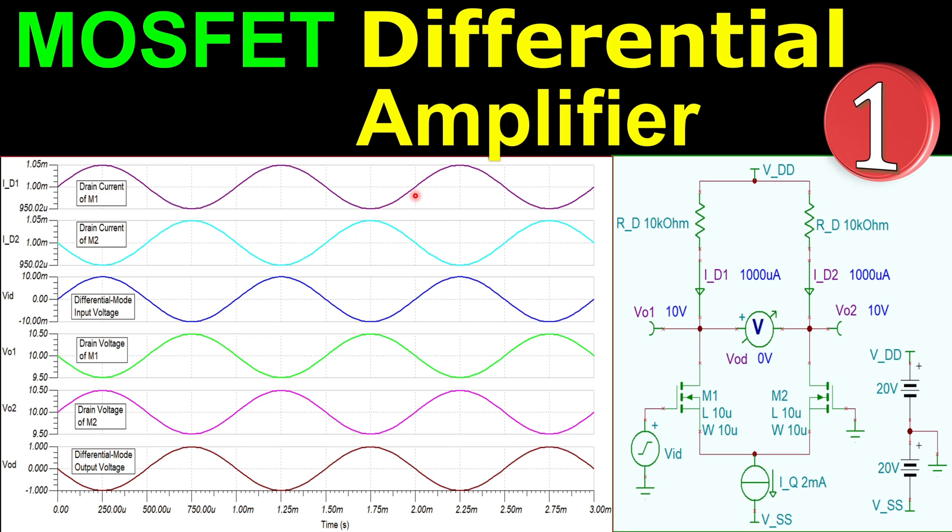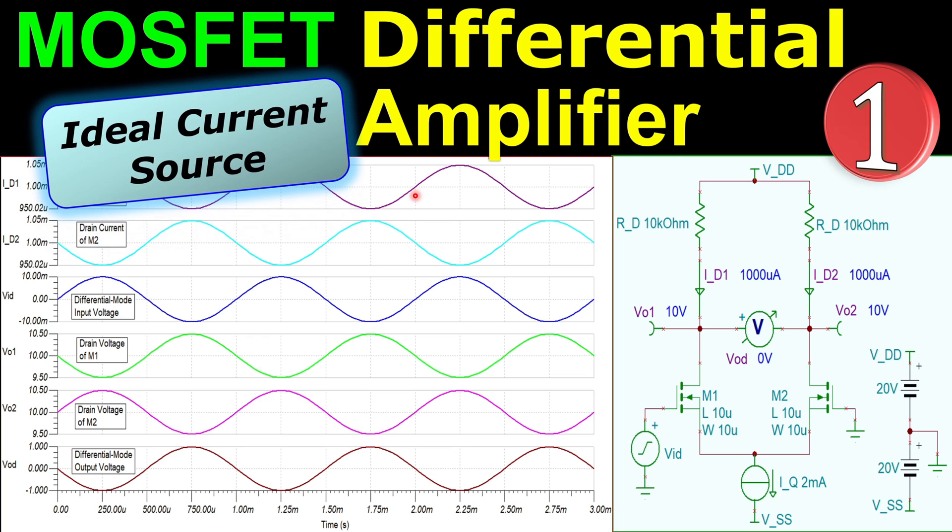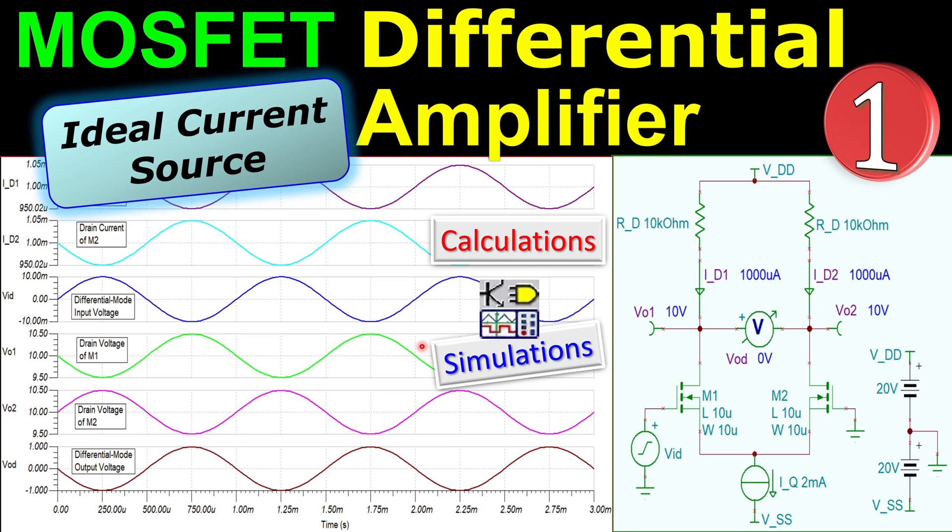We start again with a very simple situation where we have an ideal current source here, which is the tail current for our differential pair. We will work out in this example the calculations step by step, and also verify these in SPICE simulations.